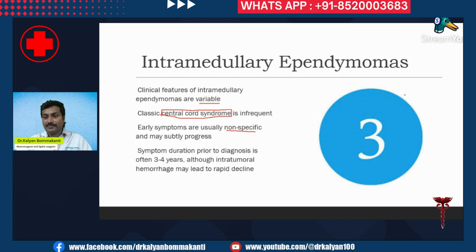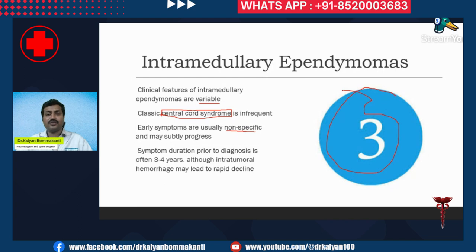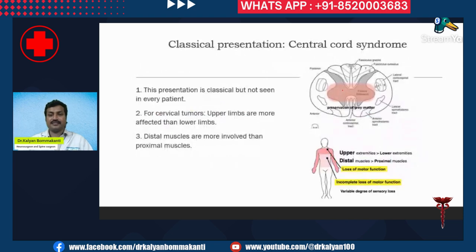These non-specific symptoms last for three to four years before a rapid decline. During this three-year period, it is very difficult to suspect a spinal cord tumor, and the tumor increases in size before symptoms become obvious. The classical presentation is central cord syndrome.